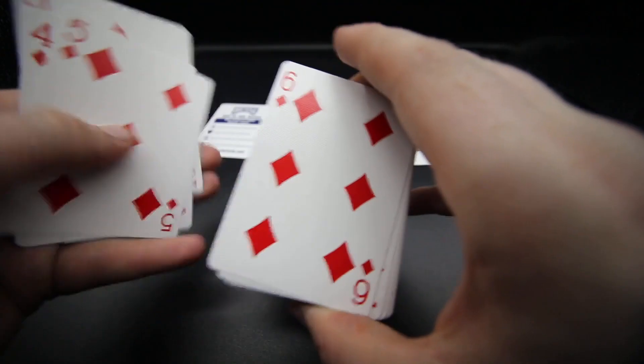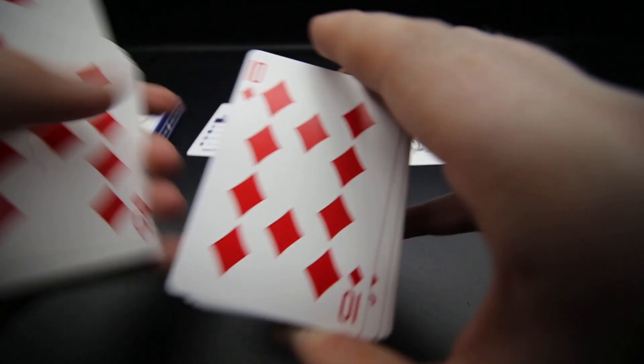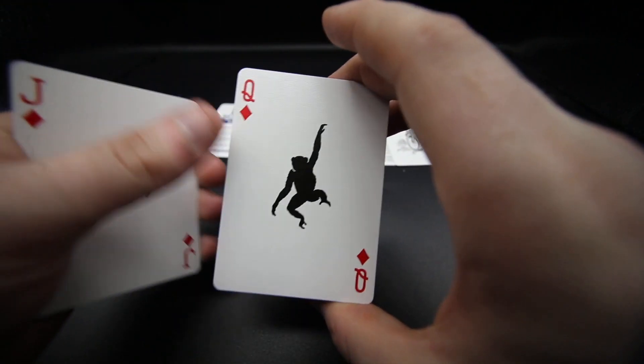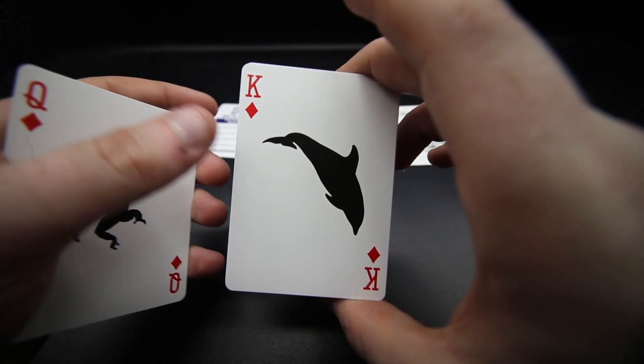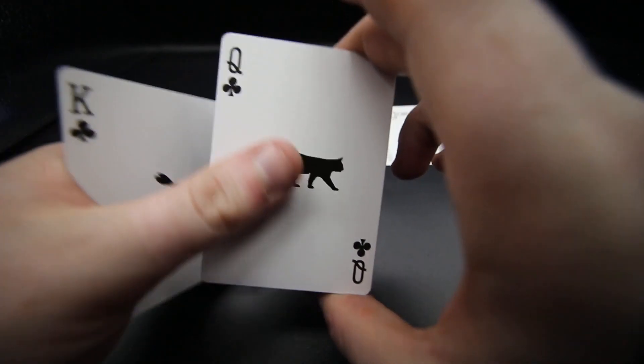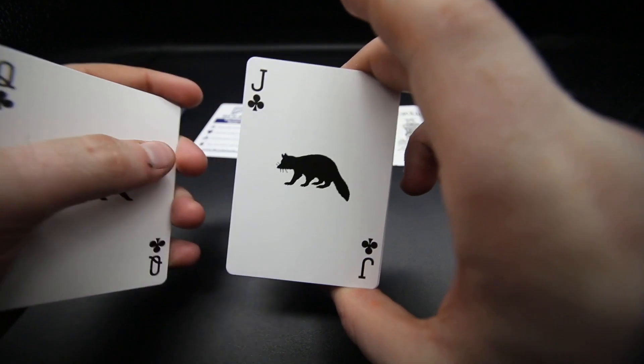And then you get to the jack, it's like a seal, and then you've got a monkey and you've got a dolphin. Then for the king of clubs you've got a rabbit, cat, a raccoon.